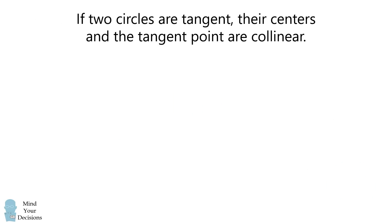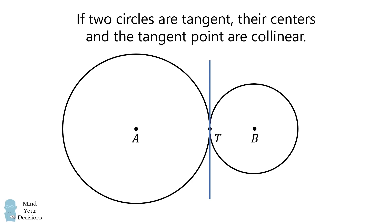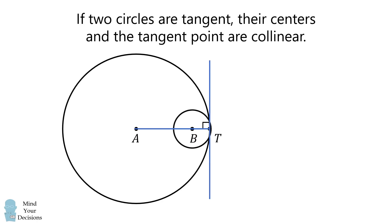Recall: if two circles are tangent, their centers and the tangent point are collinear. To see why this is true, suppose we have circles A and B that are tangent at point T. Construct the tangent line through point T. Now, AT is perpendicular to this tangent line, and BT is also perpendicular to this tangent line. Therefore, ATB is a straight line segment. This is true for both externally and internally tangent circles.